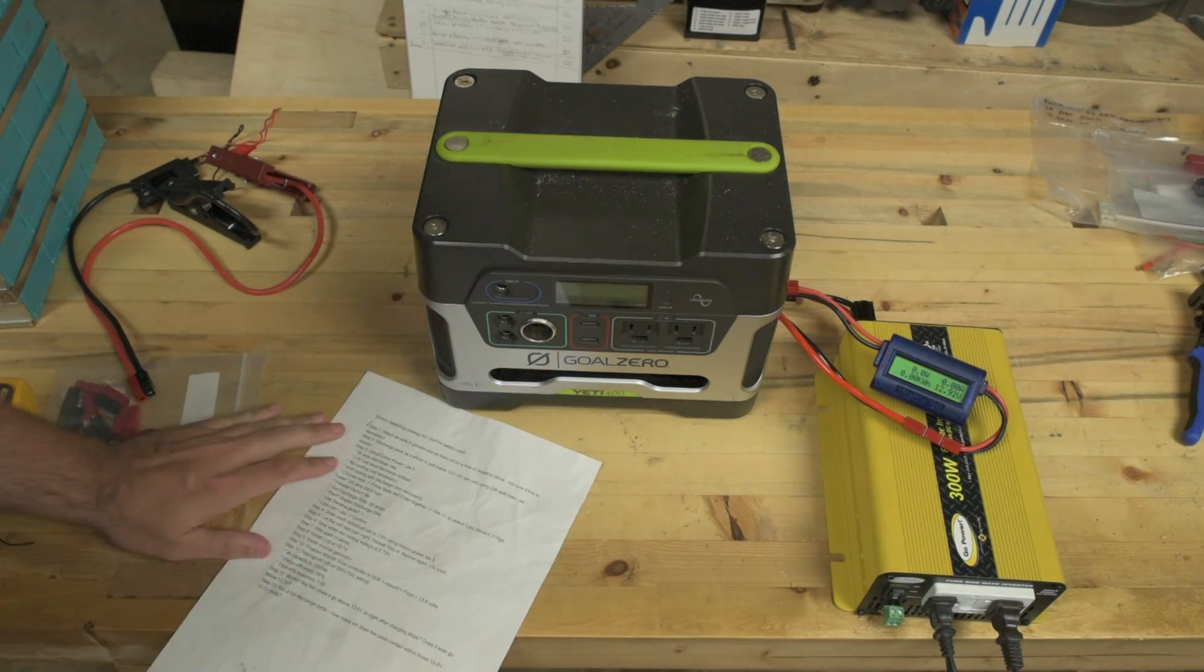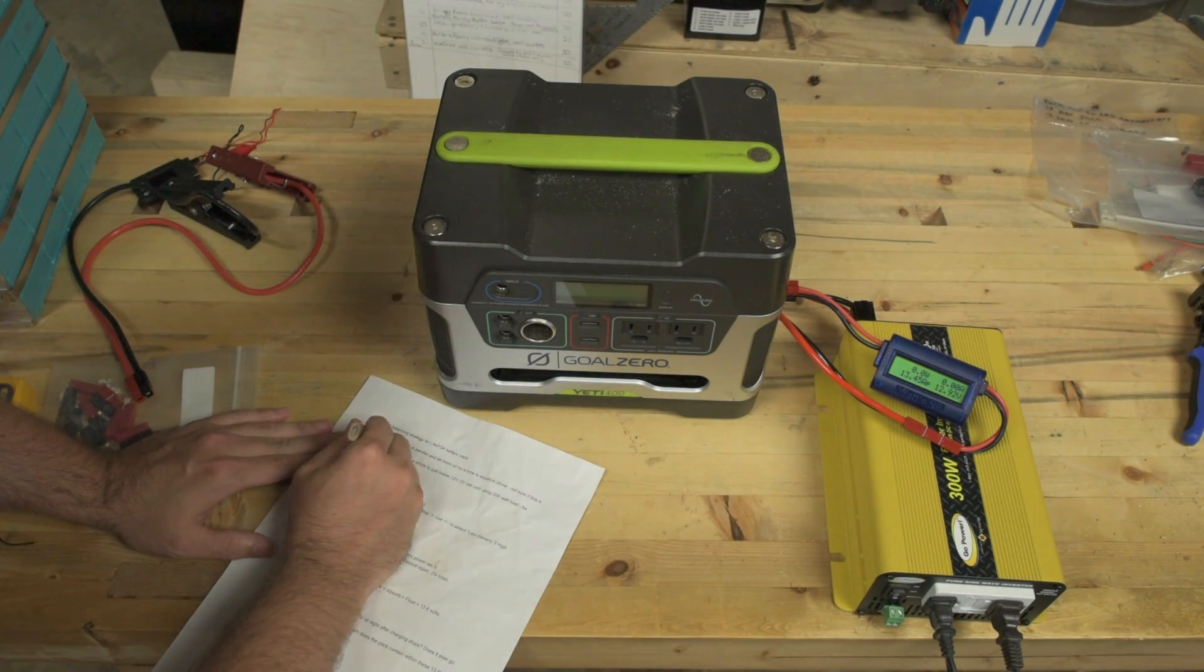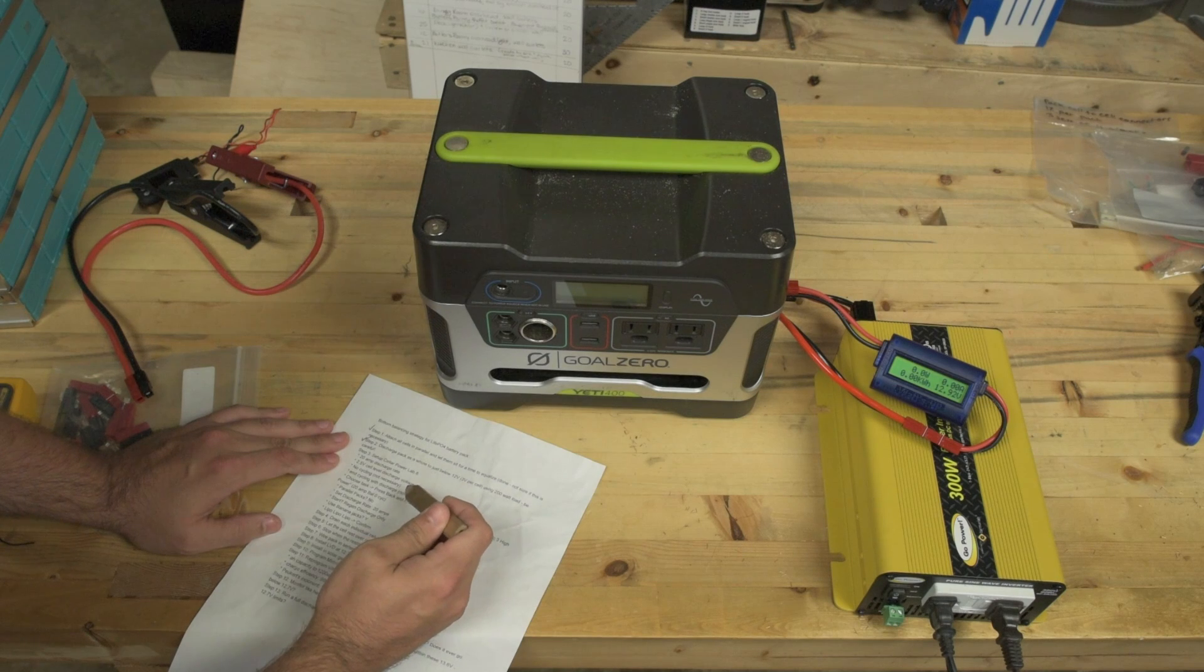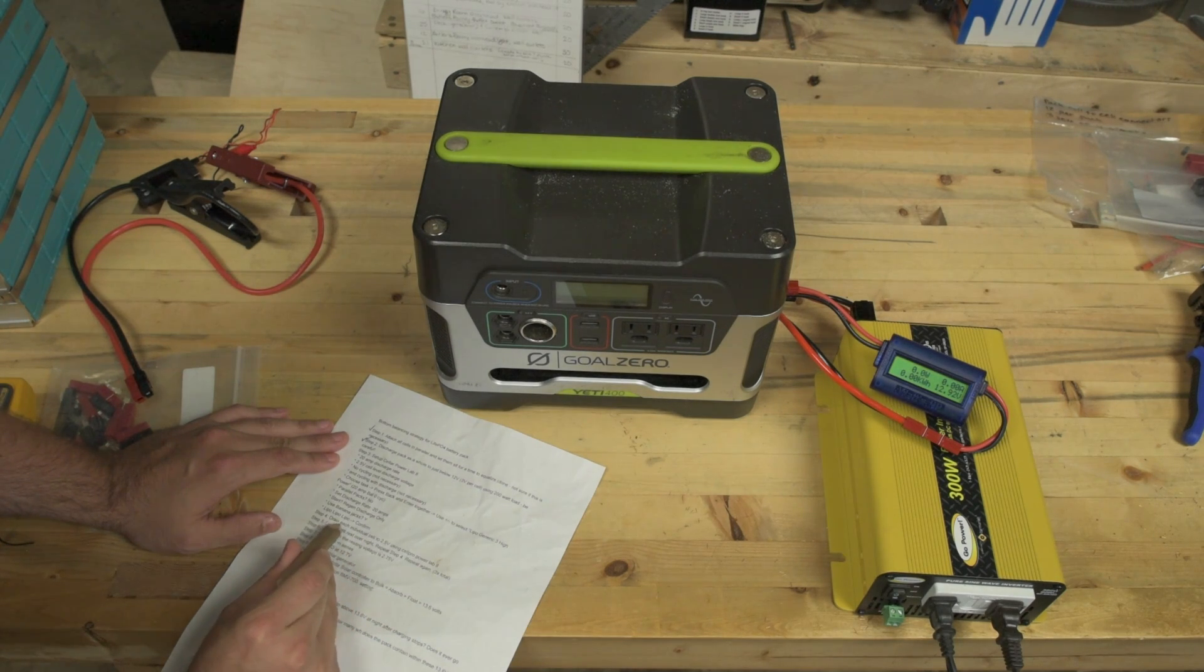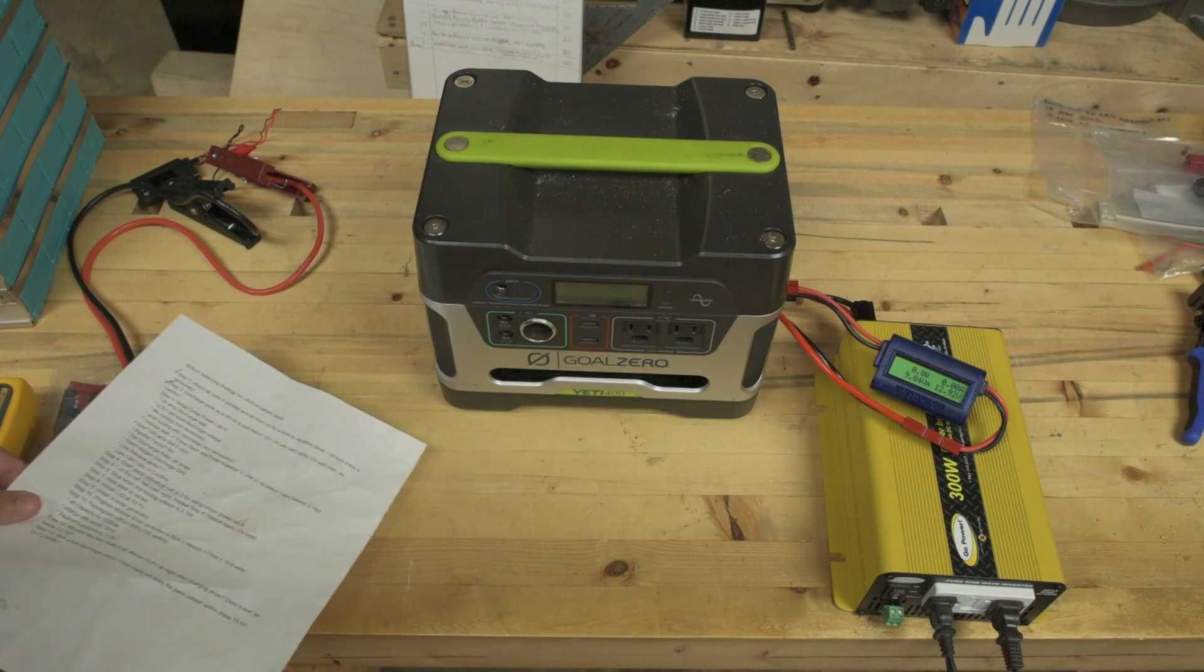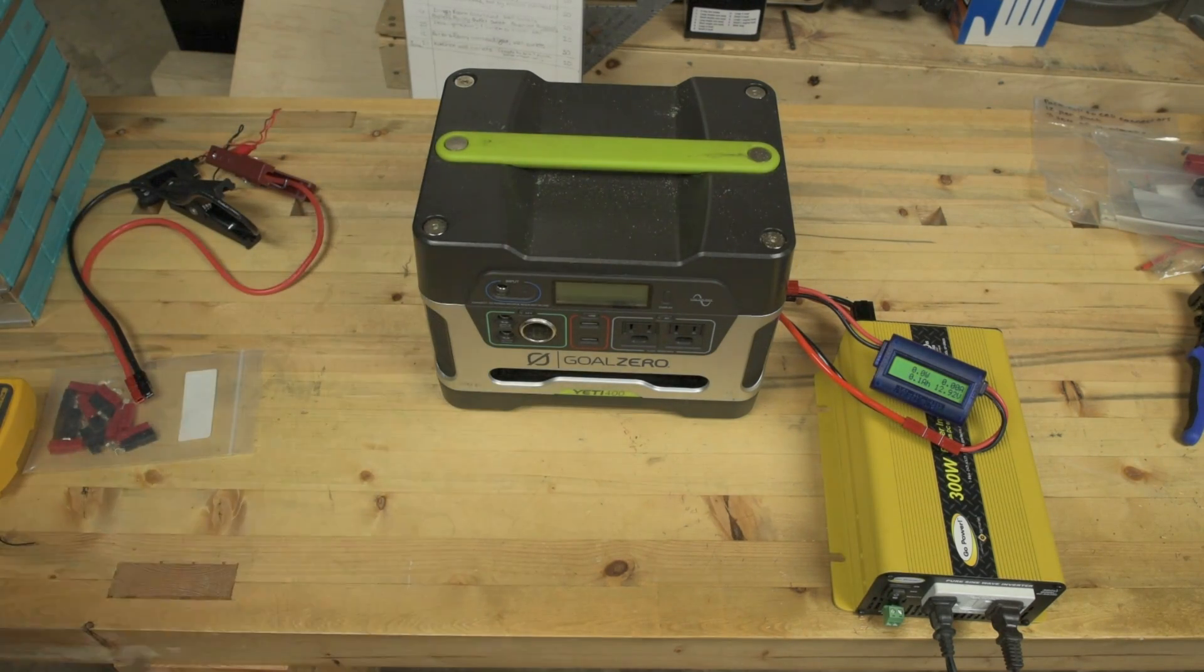For the next stage, we've performed step one and step two. Step three is to discharge each individual cell to 2.5 volts. To do that, the Cell Pro Power Lab 8 requires an external battery to power itself and to regeneratively discharge the electricity.